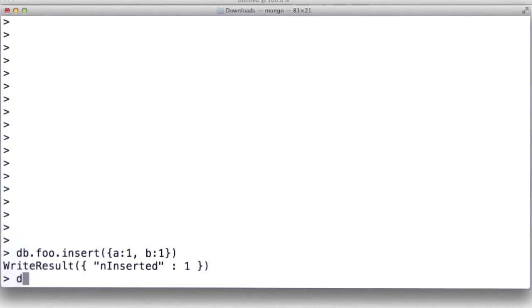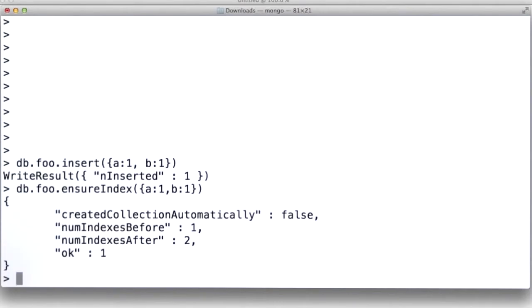OK. Now let's add an index to this, db.foo.ensureIndex. And we're going to add an index on A comma B. OK. It added the index. That's no problem. Before there was one index, which was the underscore ID index. Now it says there are two indexes.